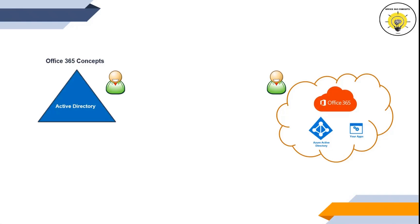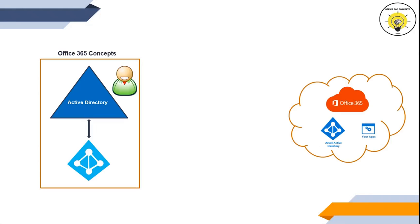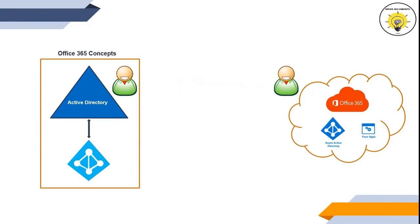To meet this requirement, we can use Azure AD Connect. We will deploy Azure AD Connect on a server and then synchronize the user account from Active Directory to Office 365. We can assign an Office 365 license to this user, and they can use services per the licenses assigned. If we want to modify any attribute or reset the password for this account, all these changes will be done from Active Directory.